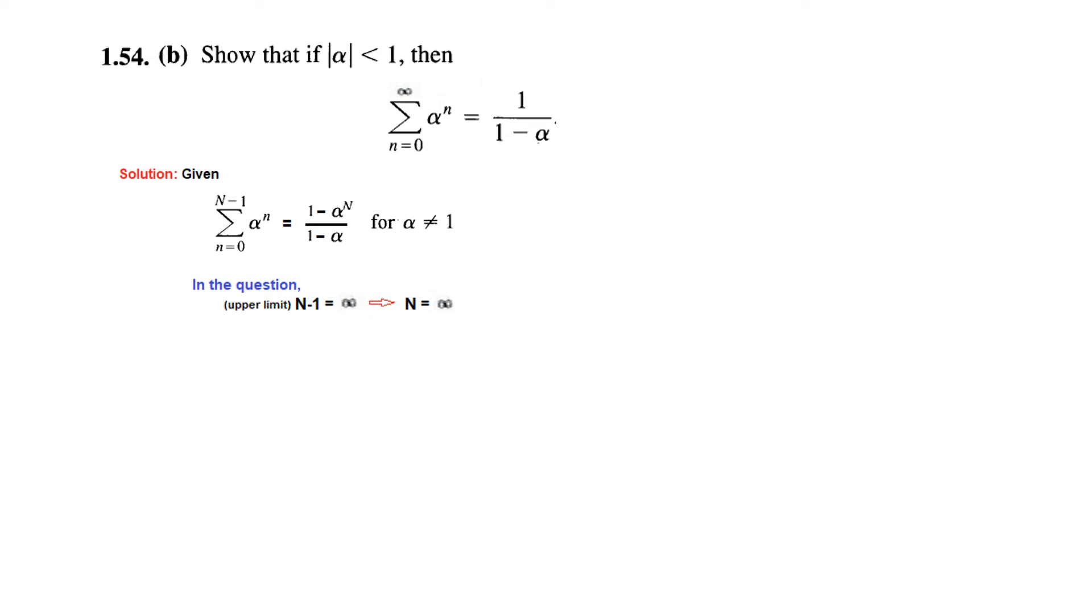Now n minus 1 is actually infinity here, so this means that n is also equal to infinity, because minus or plus 1 with infinity does not make any difference. So we will replace n by infinity, and for alpha less than 1, alpha raised to the power n or alpha raised to the power infinity will become 0.